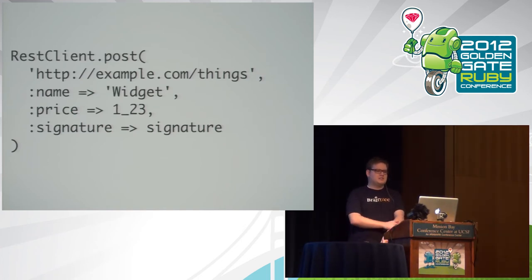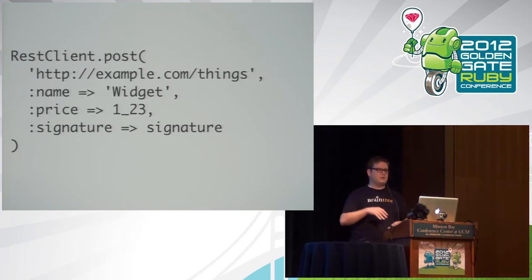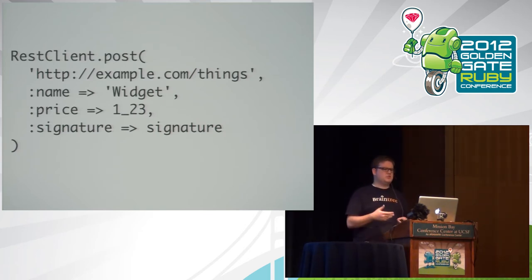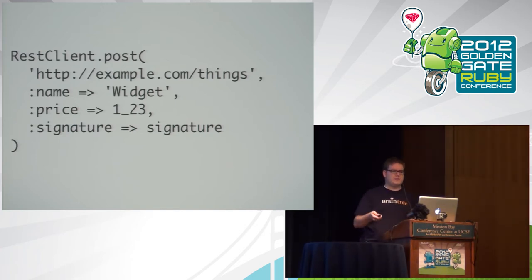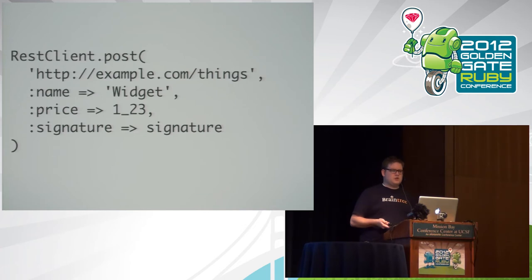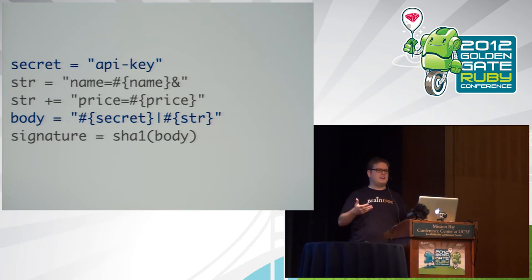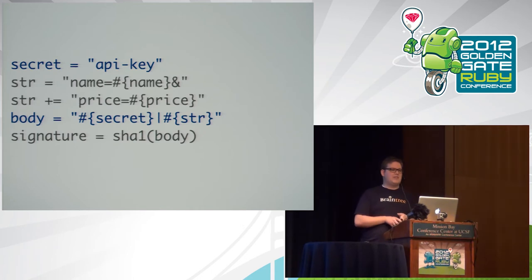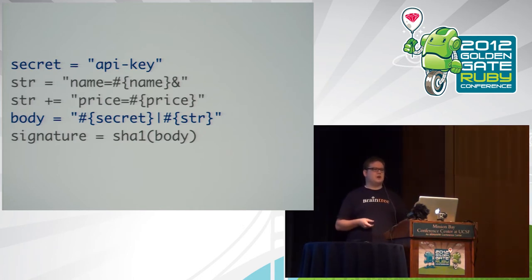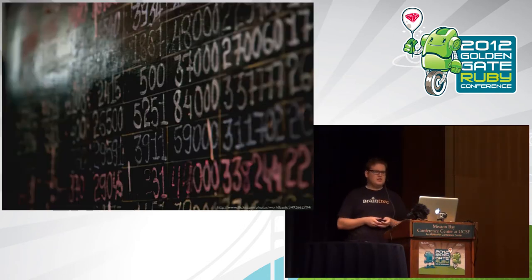Back to the length extension attack. This is a typical request to a RESTful web service: we want to create a new thing named 'widget' and we attach a signature to verify who's sending it and whether they should be able to create it. In a lot of systems, unfortunately, signatures are computed somewhat like this: take an API key, prepend it to the thing you want to send, then run it through a hash function like SHA-1 — and that hash becomes the signature.